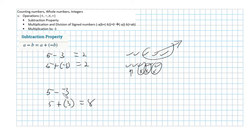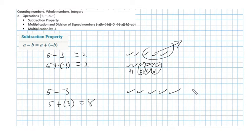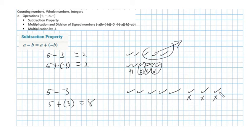How can we visualize this? We have 5 check marks, and we want to take away 3 x's — but there are no x's here. A very important property in math is that adding 0 to something leaves it the same. So we can add a check mark and an x — which is zero — three times. That doesn't change the value, but now we have x's to take away. Removing those 3 x's leaves me with 8.